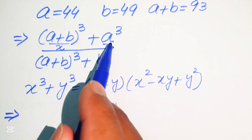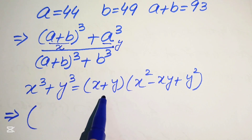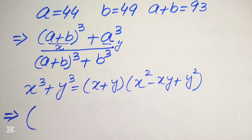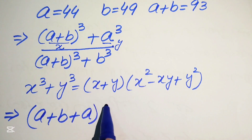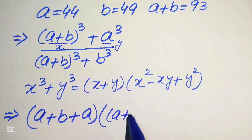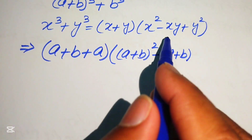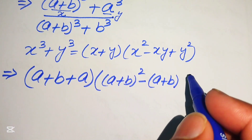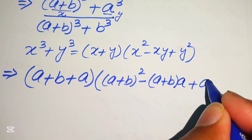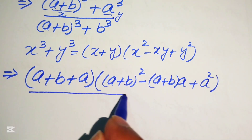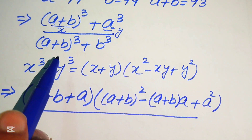We apply this cubic formula to the numerator. Here x is (a plus b) and y is a, so the numerator becomes: (a plus b plus a) times [(a plus b) squared minus (a plus b)(a) plus a squared].